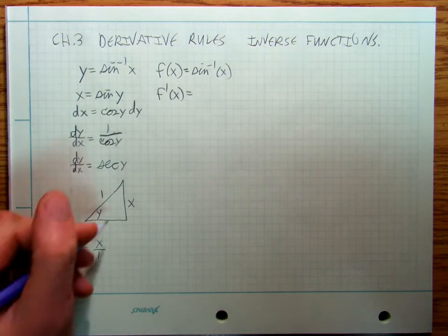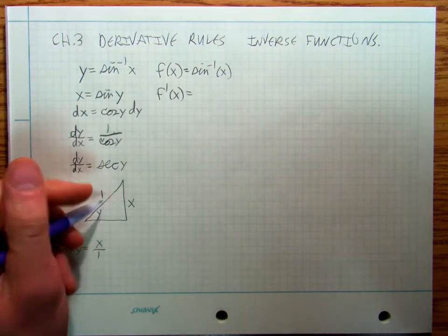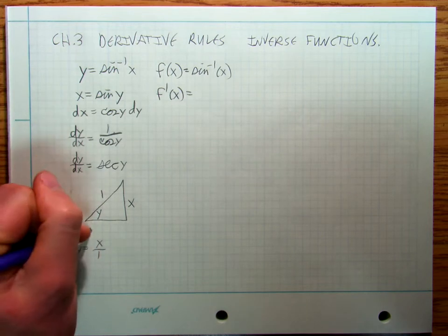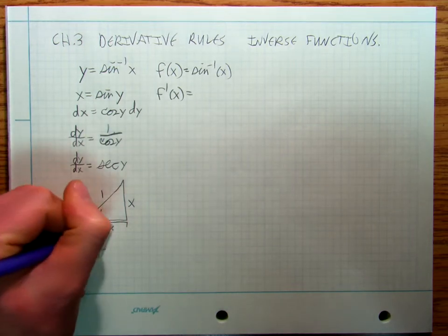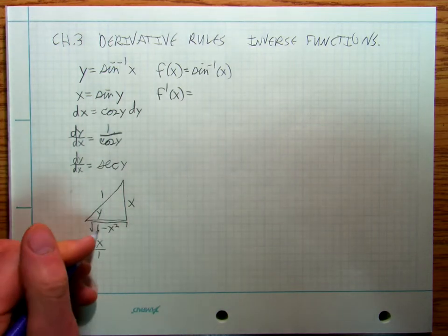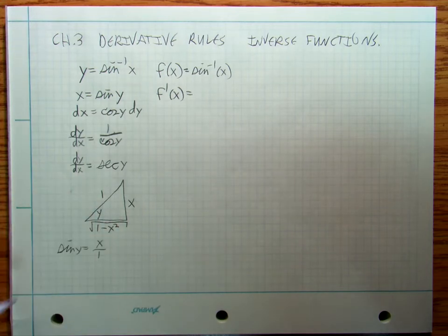Now, from Pythagorean theorem, you guys can work it out yourself. I'm going to say that this is 1 squared minus x squared. And then secant, remember which sides of the triangle are secant.